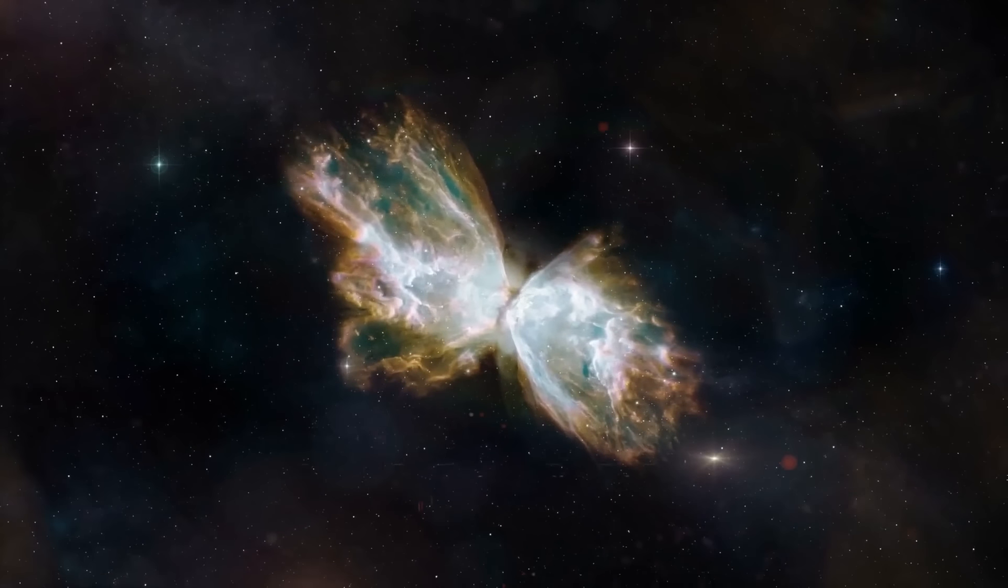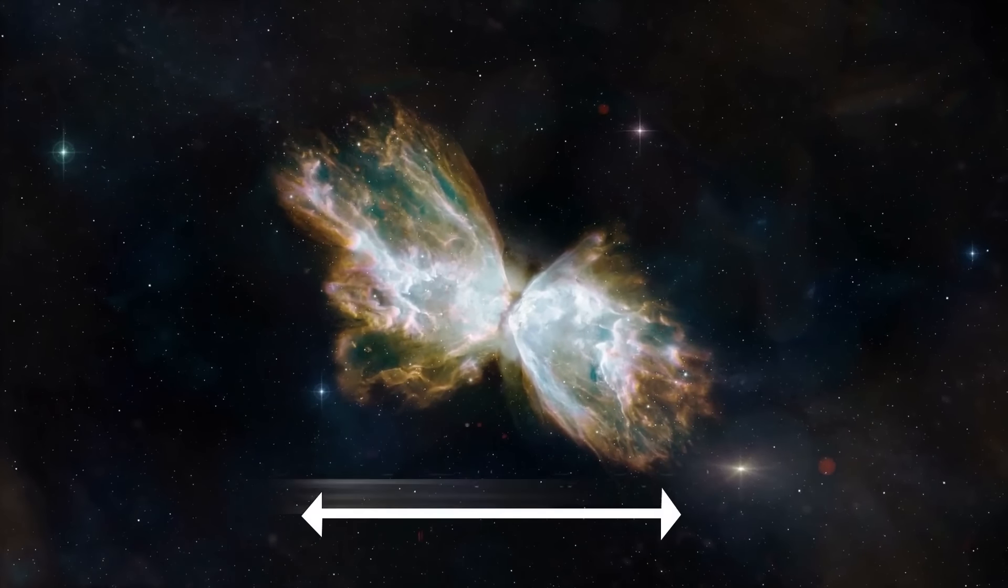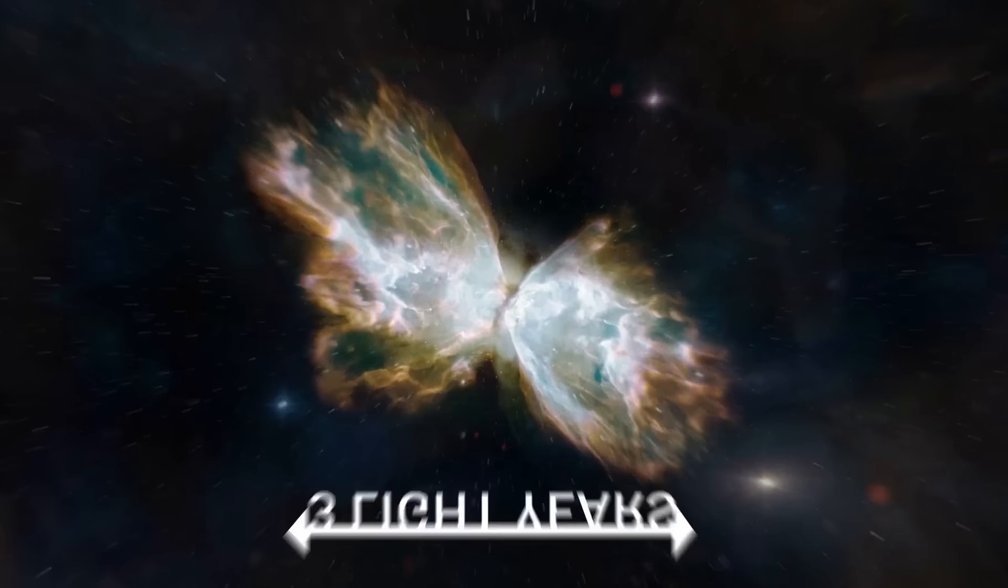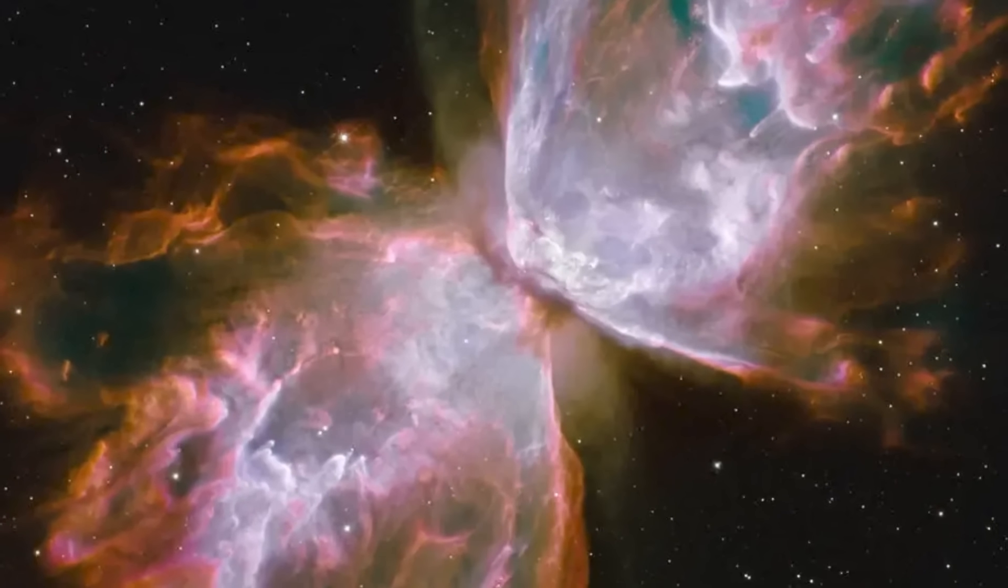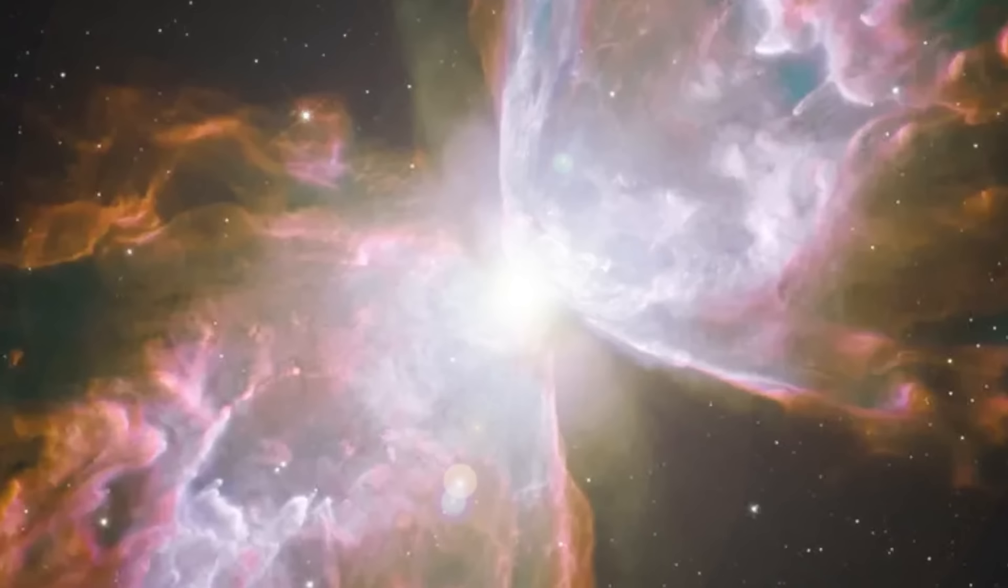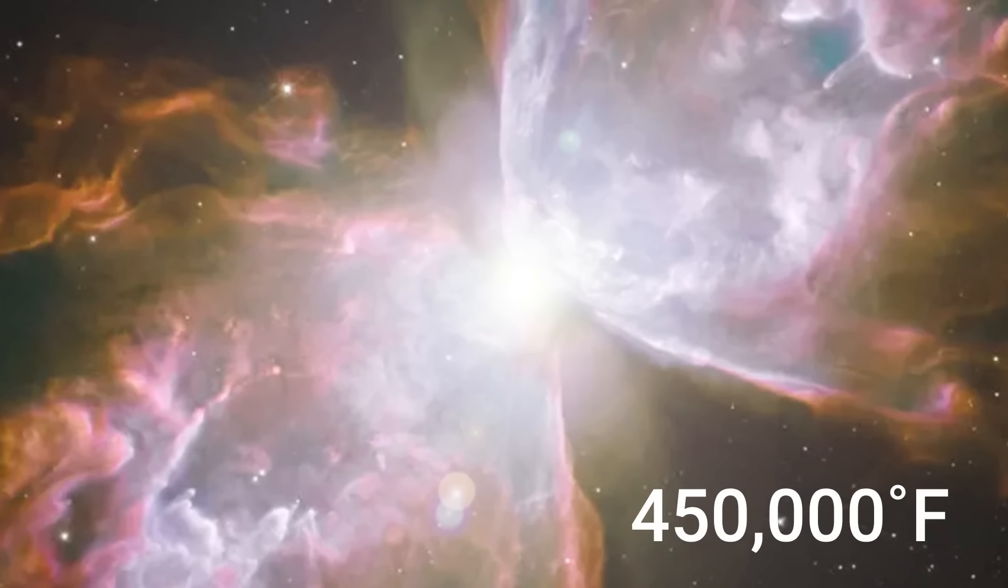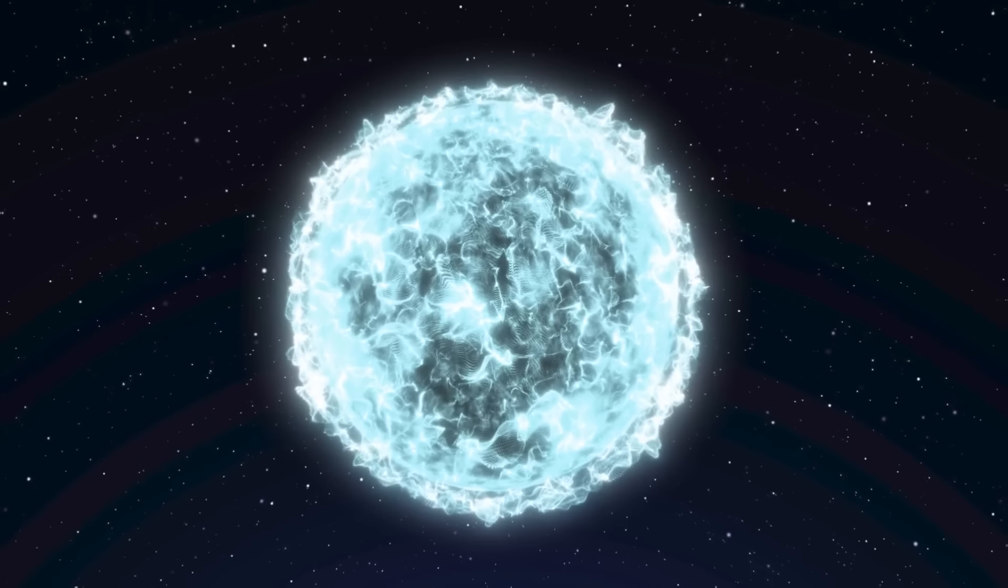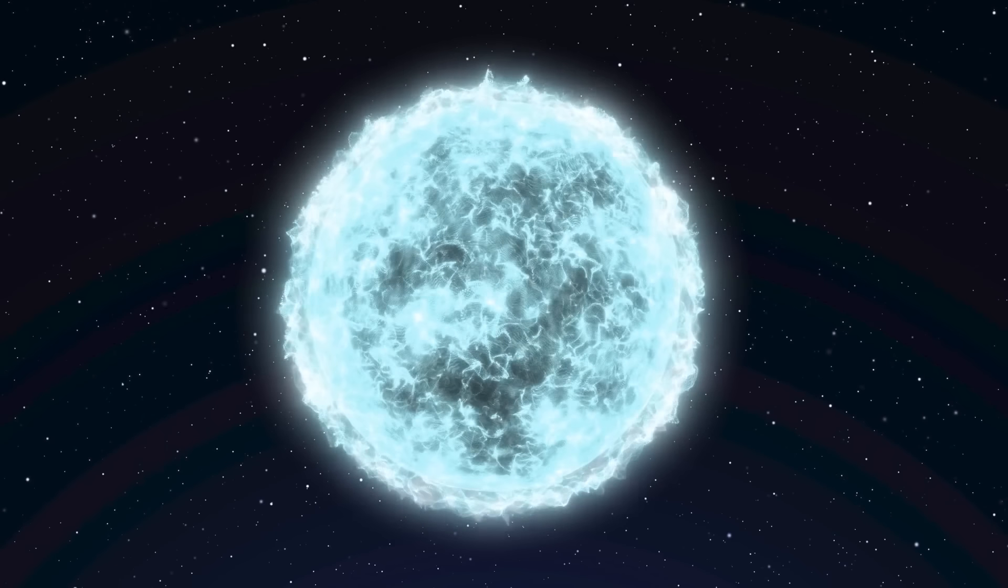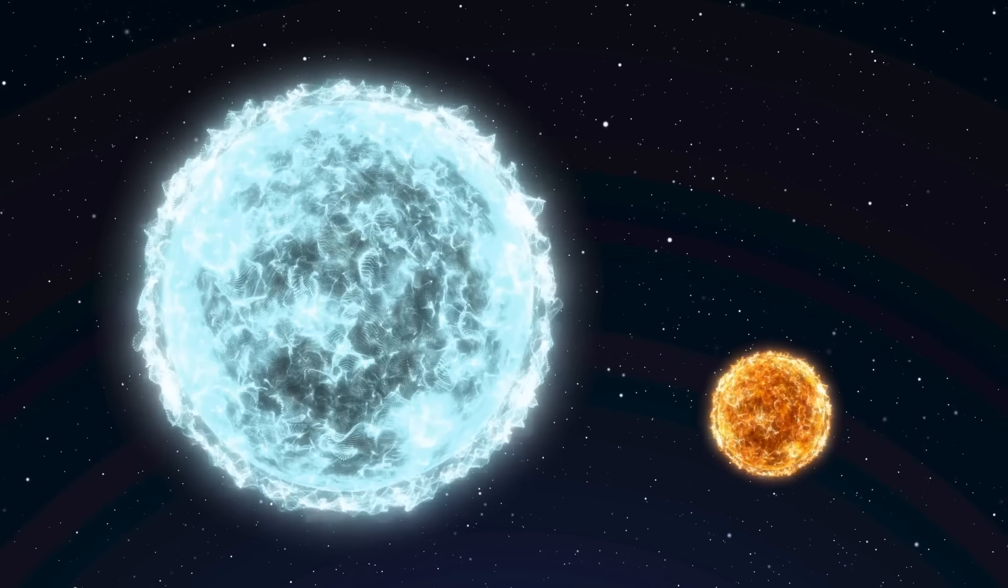And you start with the Butterfly Nebula. This butterfly's wingspan is more than three light years. And the structure inside the nebula is one of the most complicated ever observed. The central star, a white dwarf, is heated to an incredible 450,000 degrees Fahrenheit. It means it was formed from a gargantuan star, likely more than five times the size of our Sun.